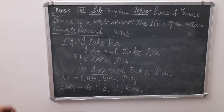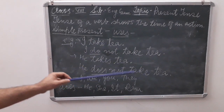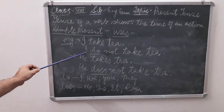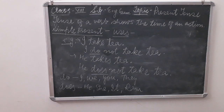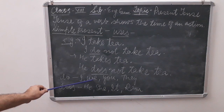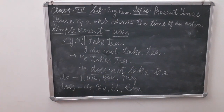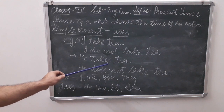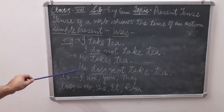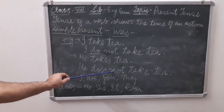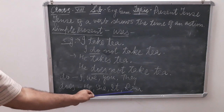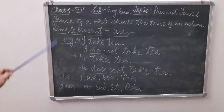Now let us see how to use negative sentences in simple present. For example, 'I take tea.' Since 'I' is first person, the negative becomes 'I do not take tea.' There are two helping verbs: 'do not' and 'does not.' 'Do not' is used with I, we, you, and they. For third person singular, 'he takes tea' — we add -s — and the negative becomes 'He does not take tea.' When we use 'does not,' the -s is removed from the main verb. 'Does not' is used with he, she, it, or any singular proper noun.